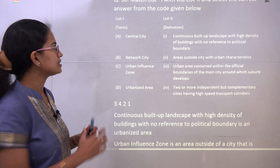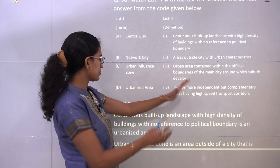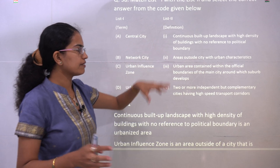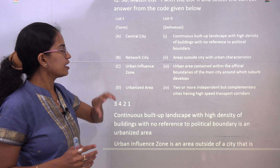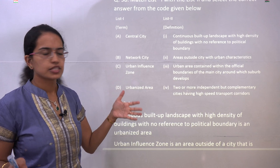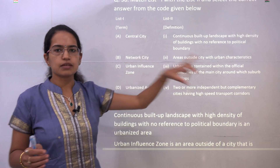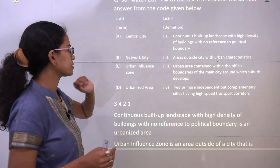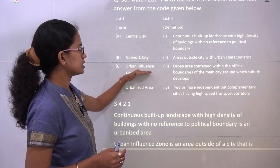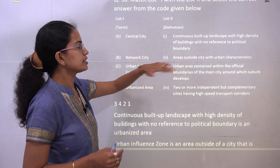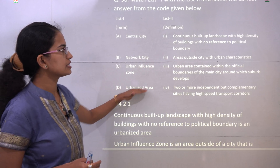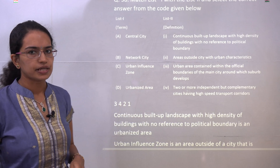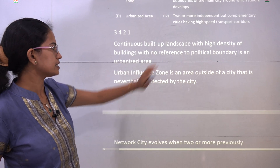The next question also requires matching terms with definitions. Central city is a city or area constrained within the official boundaries of the main city. Network city means two cities with continuous high-speed transportation running between them. Zone of influence is an area outside urban characteristics. Urbanized area is a continuous landscape built up with high-density buildings.